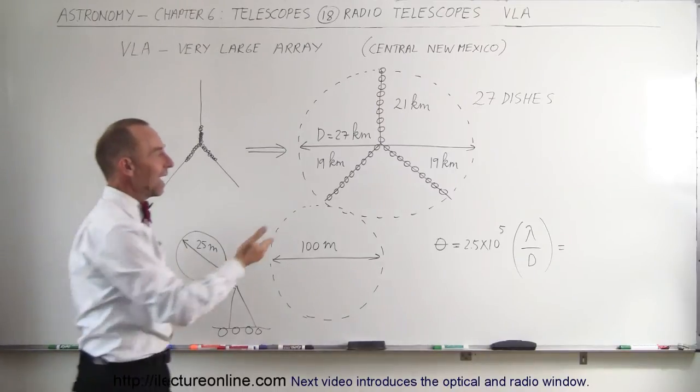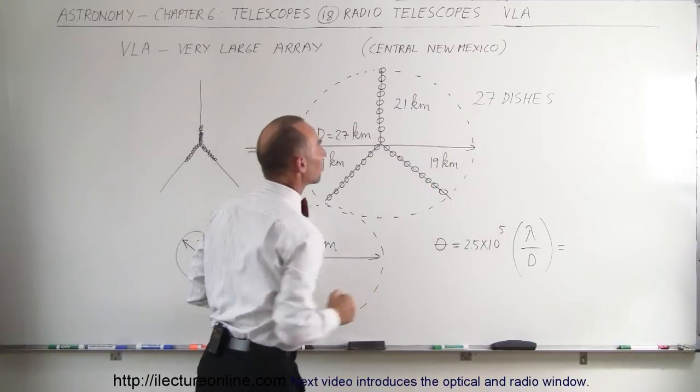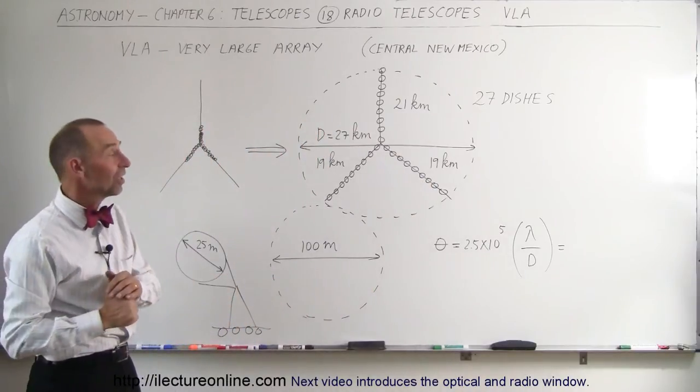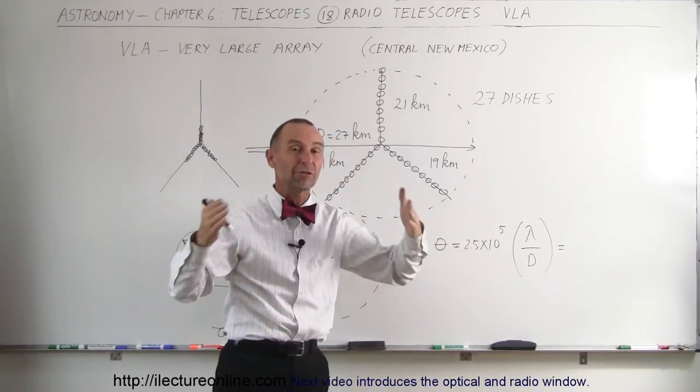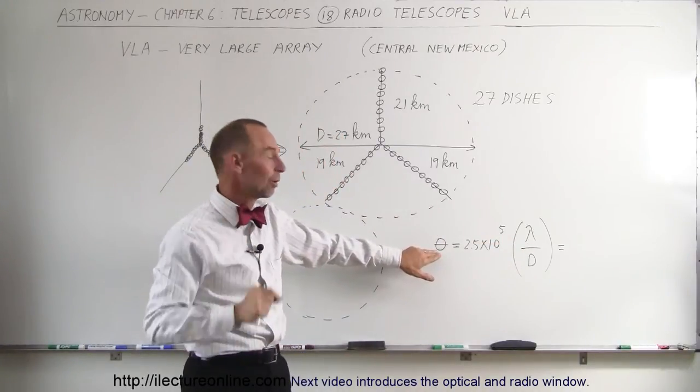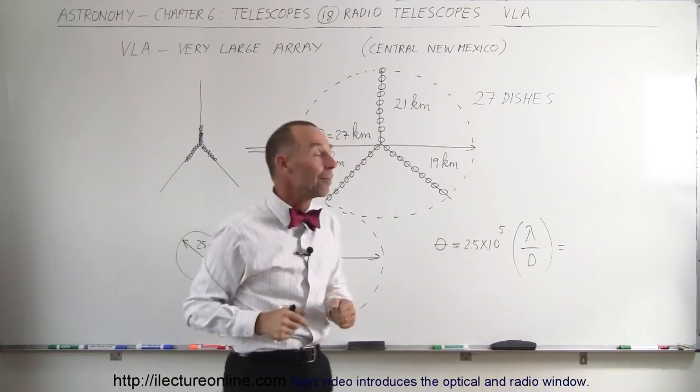In effect, they have an equivalent telescope of a diameter of 27 kilometers. The reason why that is necessary is with radio telescopes, since the wavelengths are so large compared to visible light, that would cause a very large angular resolution angle. They all wanted to compensate for that with a very large diameter.